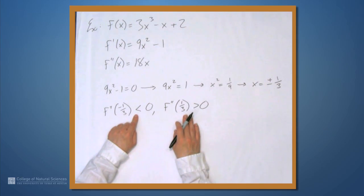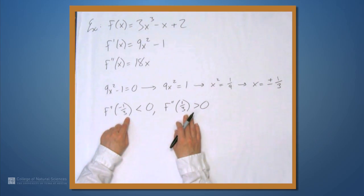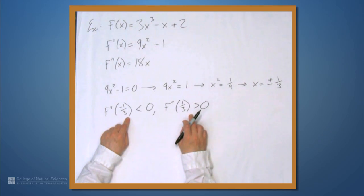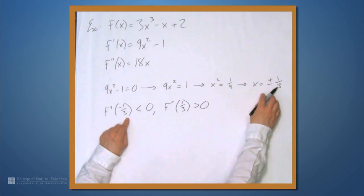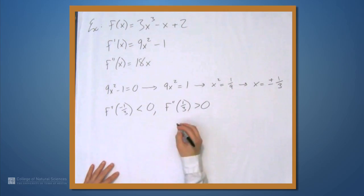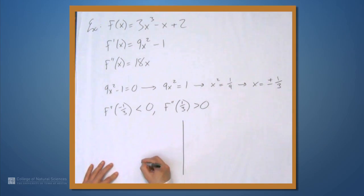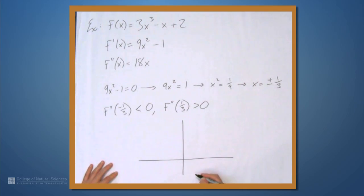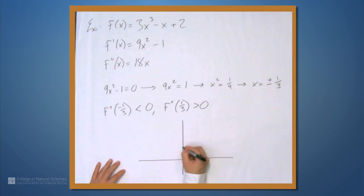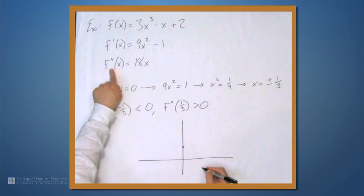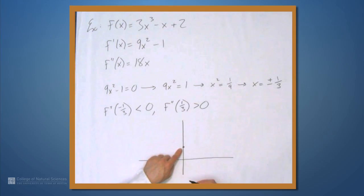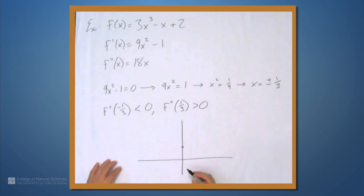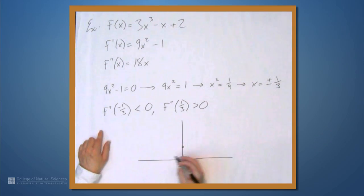This tells us concavity: if f'' is less than 0, then it's concave down; if f'' is greater than 0, then it's concave up. It also tells us what kind of points these are — local maxima or local minima. I also forgot to mention the inflection point: it's where f'' is 0, which is x = 0. So x = 0 is the inflection point, meaning concave down to the left and concave up to the right.